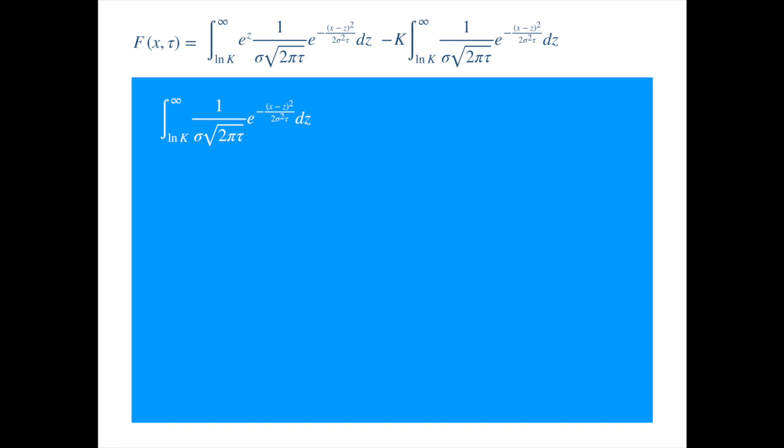We see that the integrand is essentially the probability density of a normal, with mean equal to x, and variance equal to sigma squared times tau. Notice the integration is with respect to z, so x is like a constant. We change the sign inside the square to make it z minus x. Because square of minus 1 is 1, so it won't disturb anything.